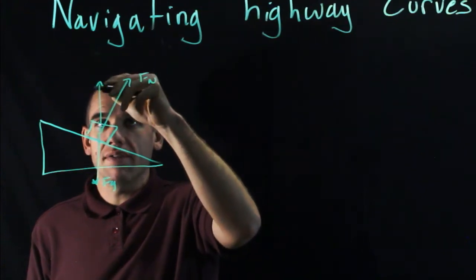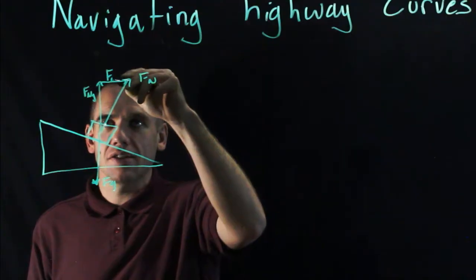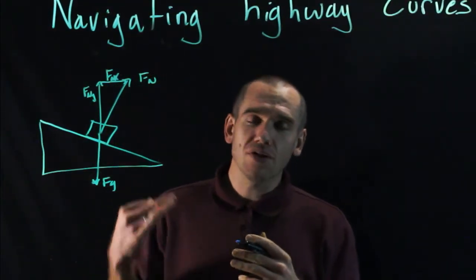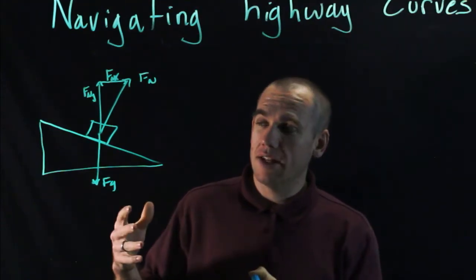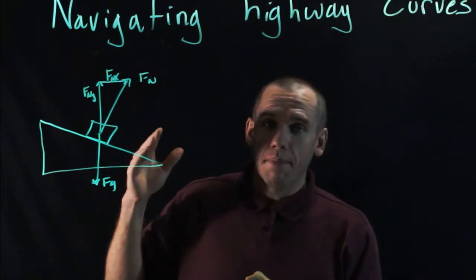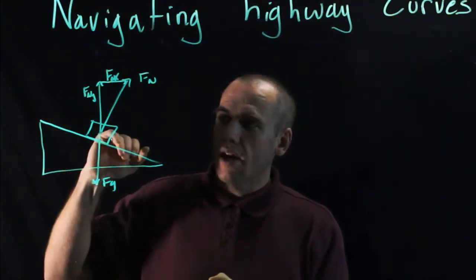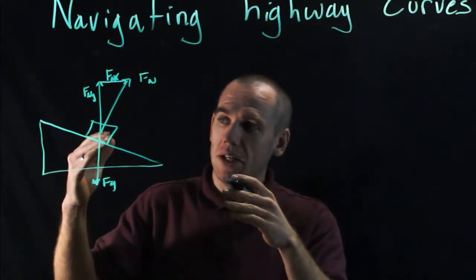And that force is still going to have components F_NY, F_NX, sorry. But now if I'm navigating this curve faster than it was designed to be, so I'm going faster than the design speed, I'm going to tend to drift up this incline because the normal force is only supplying enough force at a low speed. At a higher speed, my acceleration is greater which means I need more force pushing me in.